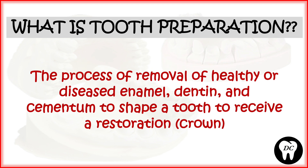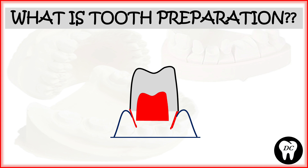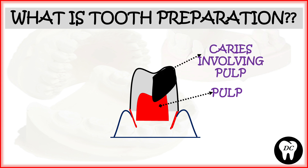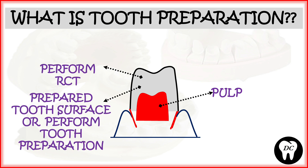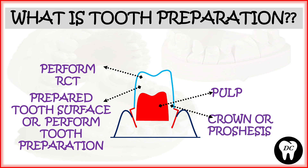Tooth preparation is the process of removal of healthy or diseased enamel, dentine, and cement to shape a tooth to receive a restoration or crown. It is not necessary that we remove only decayed parts — sometimes healthy enamel or sound dentine is also removed. For example, if caries involves the pulp, we perform RCT, then tooth preparation, and finally fit a prosthesis.